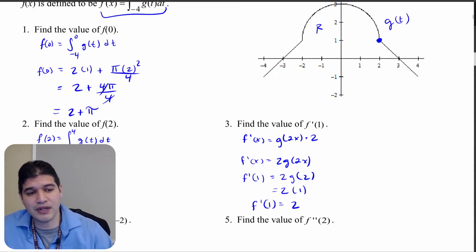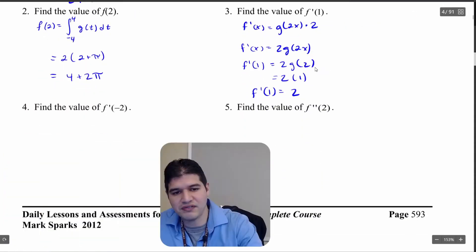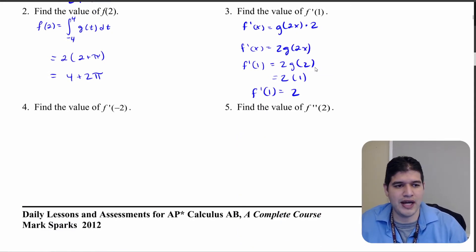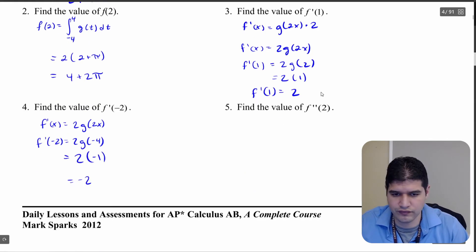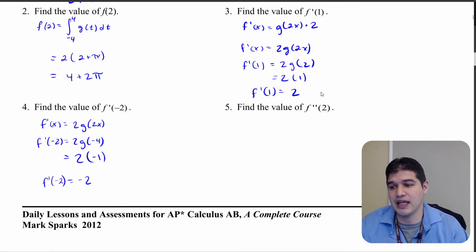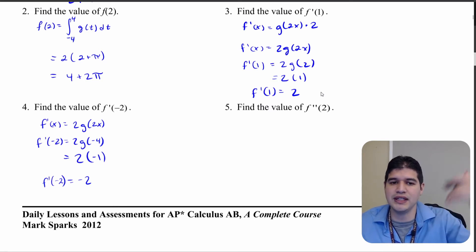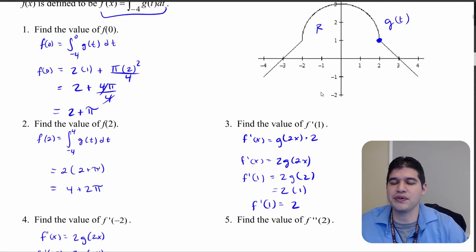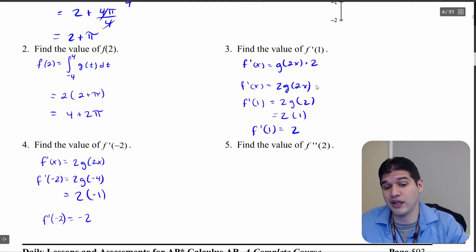Now find f prime of negative 2. Following the same format, substitute in negative 2: 2 times negative 2 gives negative 4, so I need the value of g of negative 4 from the graph, which is negative 1. Multiplying by 2 gives f prime of negative 2 equals negative 2.